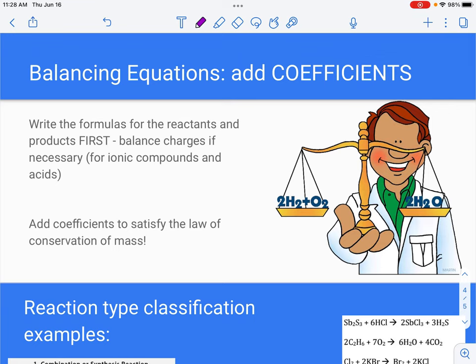Also remember that the only thing that you're allowed to do to balance a chemical equation would be to add coefficients in your reaction equation. You have to have the formulas for each of the individual pieces in the equation written correctly first, and you'll need to make sure that for ionic compounds and acids, you're balancing charges. This is going to be largely review of nomenclature as well as review from classification.